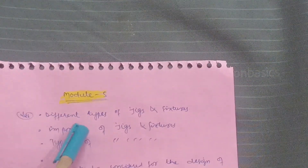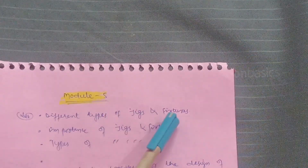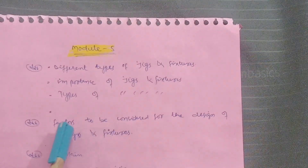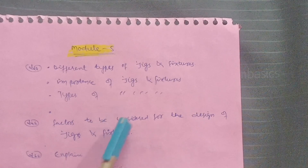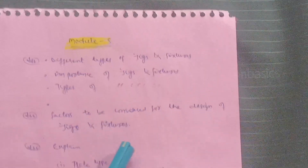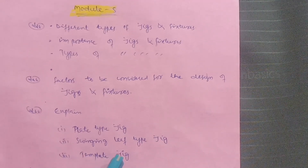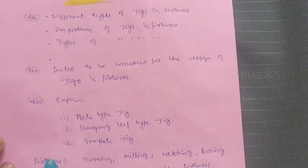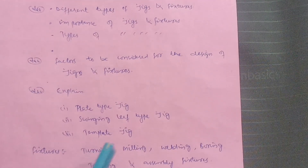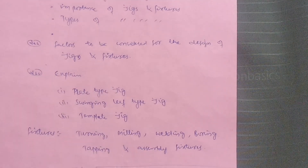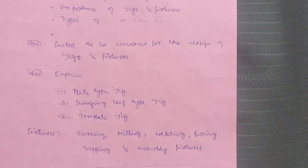The last module is Module 5 on Jigs and Fixtures. Cover different types of jigs and fixtures, their importance, and the factors to be considered for the design of jigs and fixtures. Explain plate type jig, swinging leaf type jig, and template jig. For fixtures, write about turning, milling, welding, boring, tapping, and assembly fixtures — these are the important ones in Module 5.